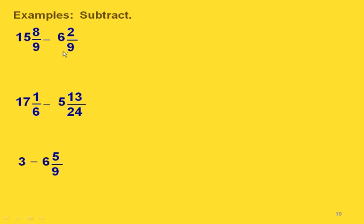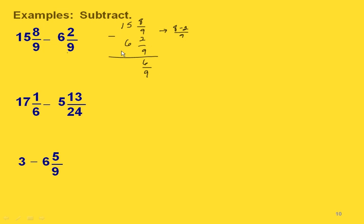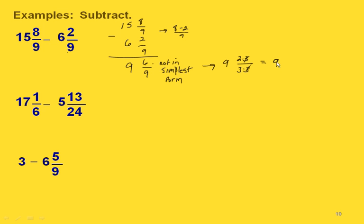Here are some examples. In this one we already have a common denominator between our fractional parts. We have 15 and 8 ninths minus 6 and 2 ninths. Subtracting: 8 ninths minus 2 ninths is the same as 8 minus 2 over 9, which gives us 6 ninths. Then 15 minus 6 gives us 9. We didn't have to do any borrowing, but notice our fractional part is not in simplest form. Since 6 and 9 both have a factor of 3, we cancel that out and get 9 and 2 thirds in simplest form.